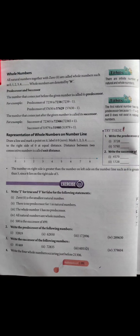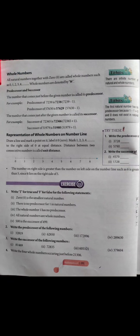'All natural numbers are whole numbers.' Saare natural numbers whole numbers hote hain — yeh bilkul True hai, kyunki natural numbers 1 se start hote hain aur saare whole numbers ke andar aate hain. '500 is the successor of 499.' 499 ke baad 500 hi aata hai — isliye True.